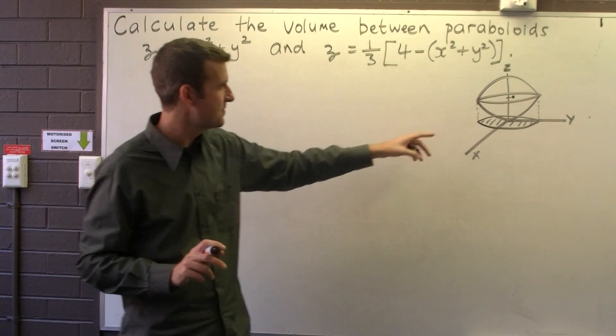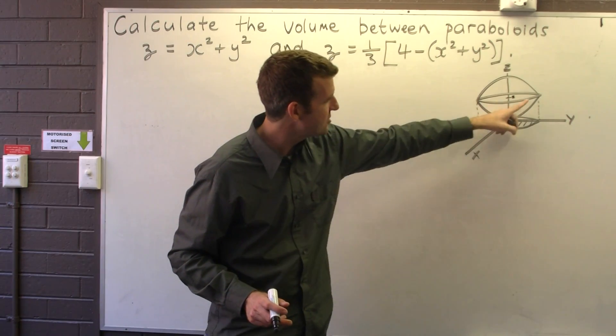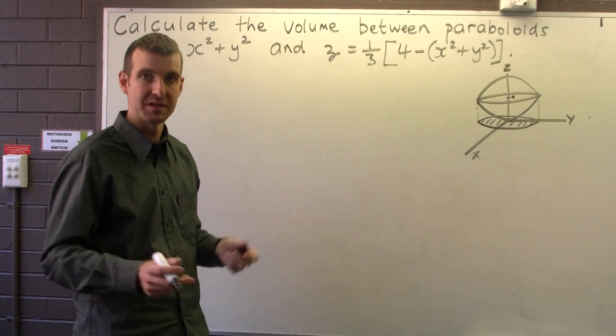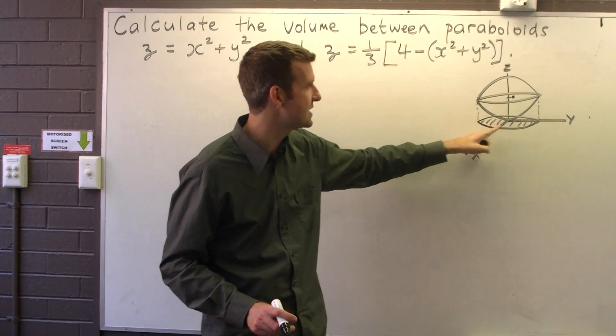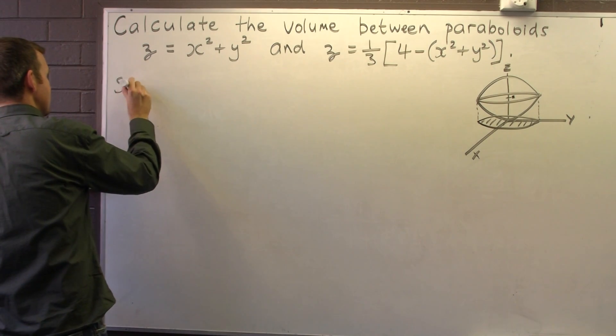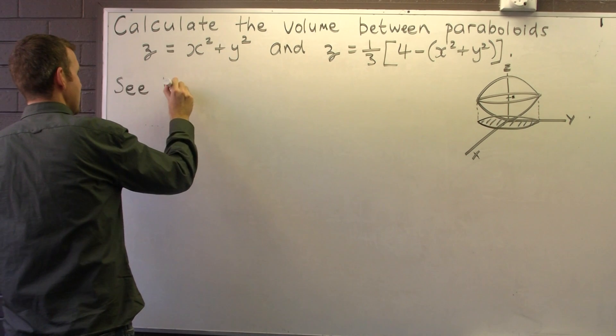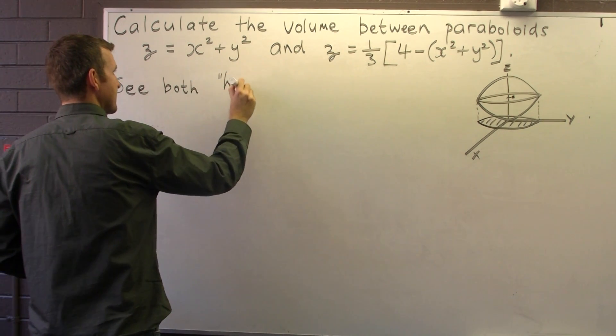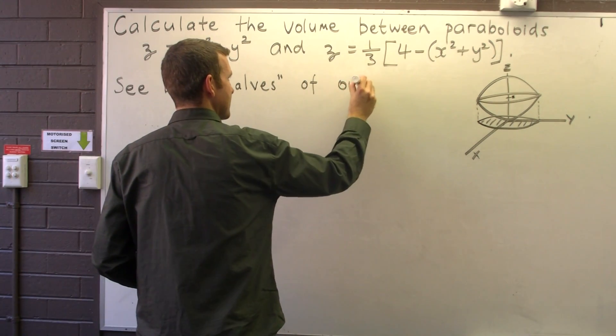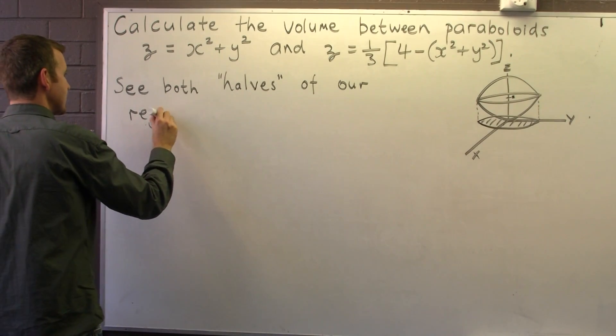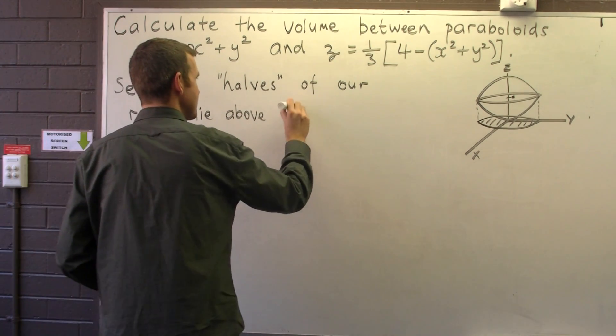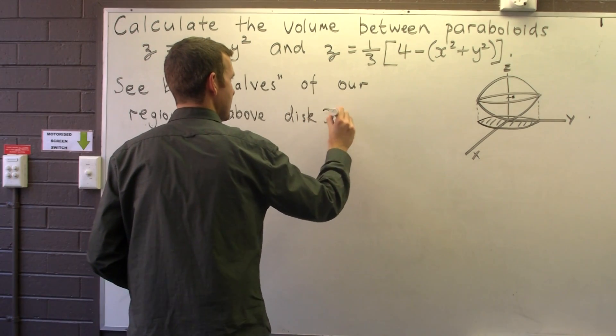Both halves, in quotation marks—they're not really halves—project onto the following disc in the xy plane. Why is that important? Well, the important thing here is that we're going to integrate over this disc. Both halves of our region lie above the disc, both halves of our region lie above the disc.